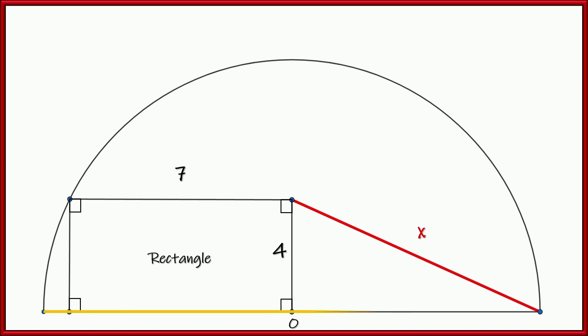Now also, this is a semicircle, which means this is a straight line, which makes this angle a right angle, which makes this a right triangle. So x is actually the hypotenuse of a right triangle, and that is a key piece of information.